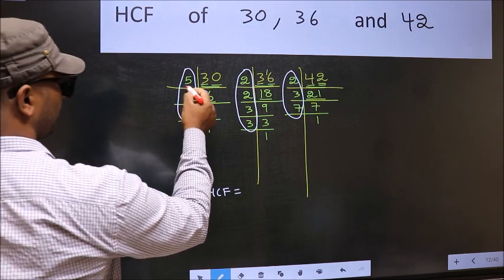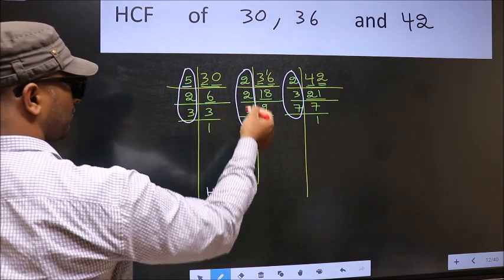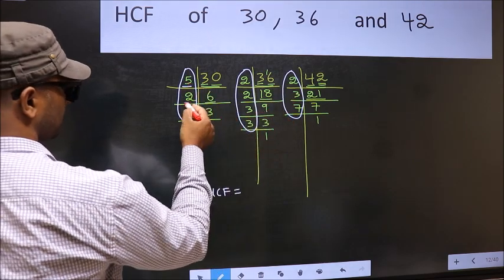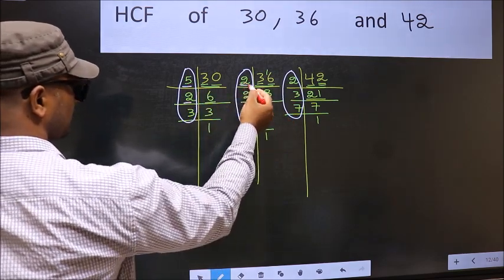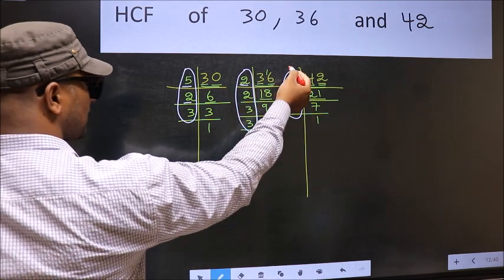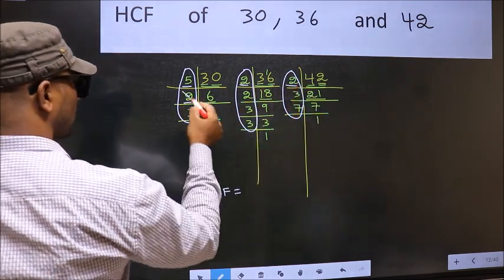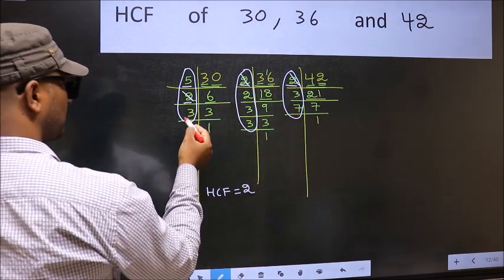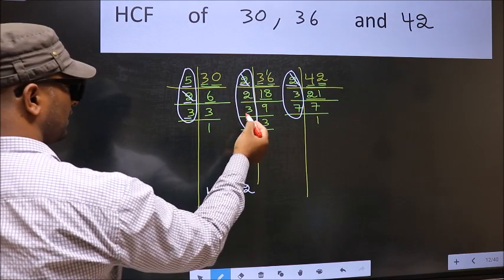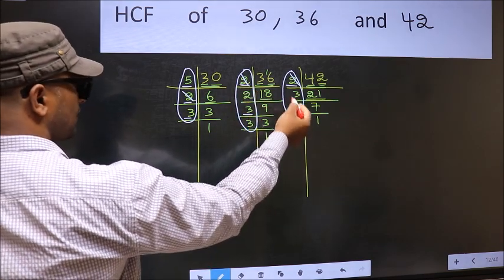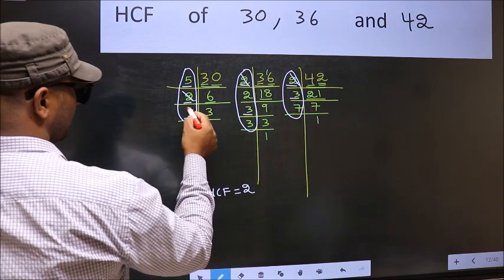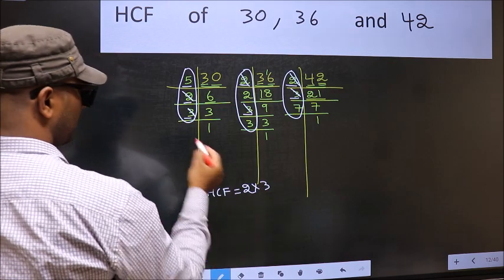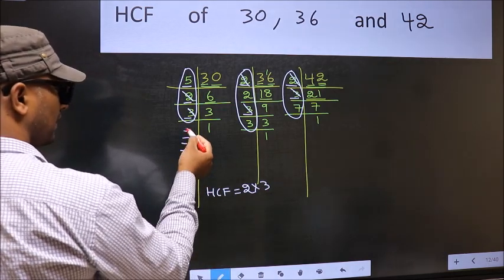So now let us find the numbers which are present in these 3 places. Starting with the number 5. Do we have 5 here? No. So no need to check in the other place. Next number 2. Do we have 2 here? Yes. Go to the next place. Do we have 2 here? Yes. So cut 2 right here. Next number 3. Do we have 3 here? Yes. Go to the next place. Do we have 3 here? Yes. So cut 3 right here. No more numbers have been left out.